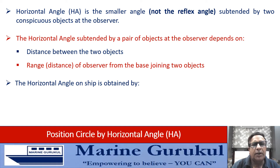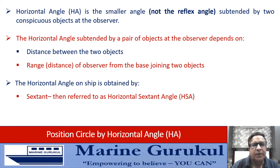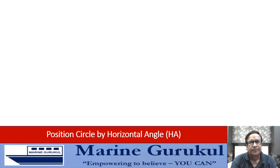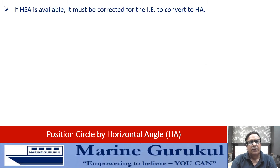The horizontal angle on the ship is obtained by either sextant — in that case it is referred to as horizontal sextant angle — or by the difference between the bearings of the two objects. If a horizontal sextant angle is available, it must be corrected for index error to convert to a horizontal angle.